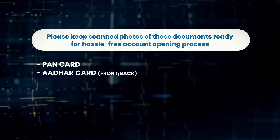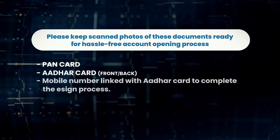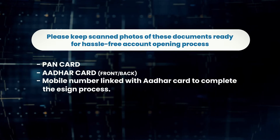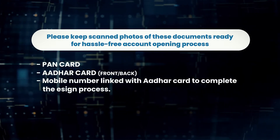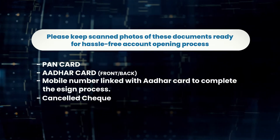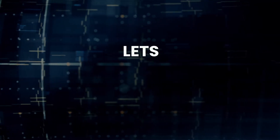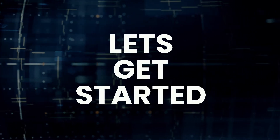Pan card. Aadhaar card, front and back. Mobile number linked with Aadhaar card to complete the e-sign process. Cancelled check. Signature on a white paper. Let's get started.